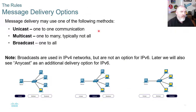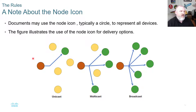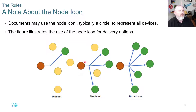Message delivery options may use one of the following methods: unicast, multicast, or broadcast. Broadcasts are used in IPv4 networks but are not an option in v6; later we'll also see anycast as an additional delivery option for IPv6. Unicast — the easiest way to remember it — is one sender to one receiver; all the rest are ignored. Multicast goes to multiple set receivers: one sender, multiple receivers. Broadcast means it broadcasts to everything. Unicast: one; multicast: many; broadcast: everybody.